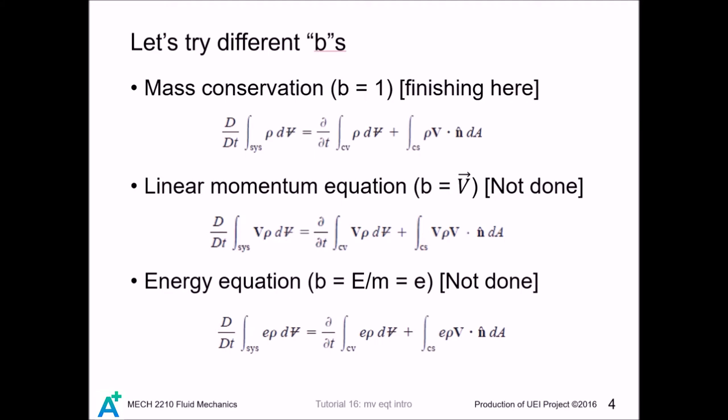In this chapter, we take the intensive parameter B as 1, velocity, and specific energy. Then after some simplification, we get the three important equations in this chapter.